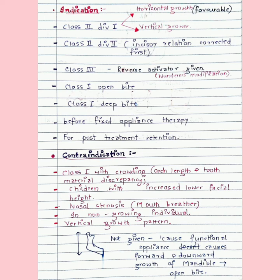The activator is given in Class II Division 1, which can have both vertical or horizontal growth pattern, but myofunctional appliances are more favorable in a horizontal growth pattern — we already discussed this. When myofunctional appliances are given, there is forward growth of the mandible and also downward growth, which can lead to open bite. Hence these appliances are rarely given in vertical growers. They are also given in Class II Division 2, but only after the incisor relationship is first corrected.